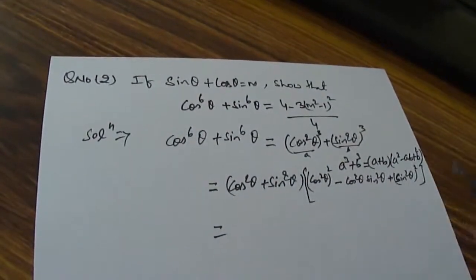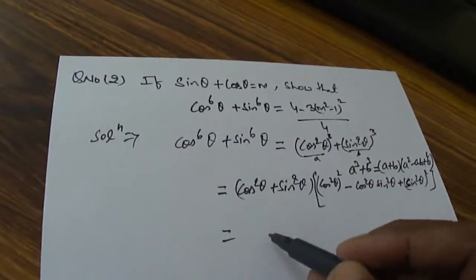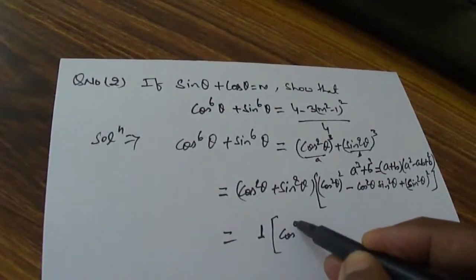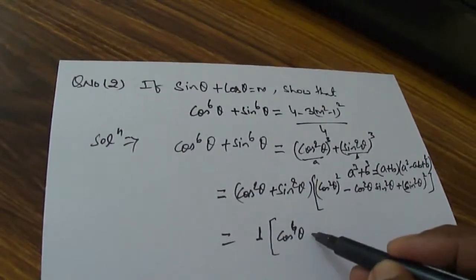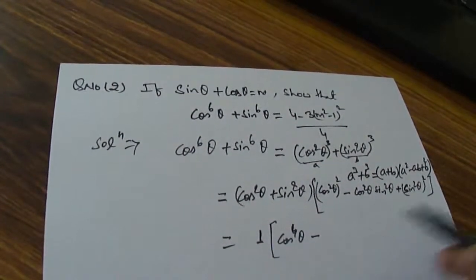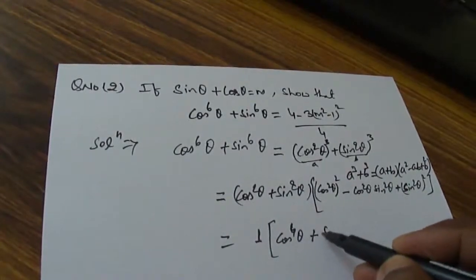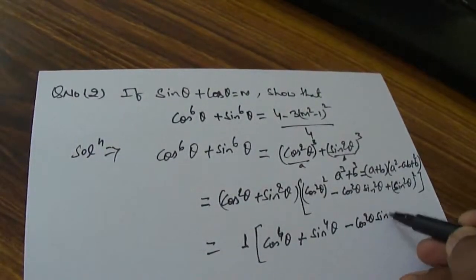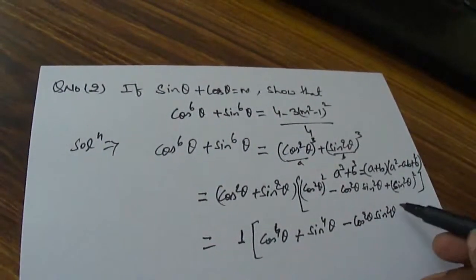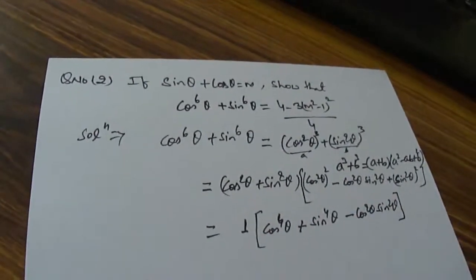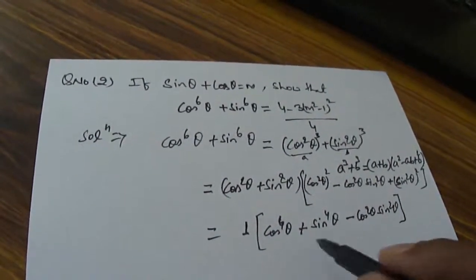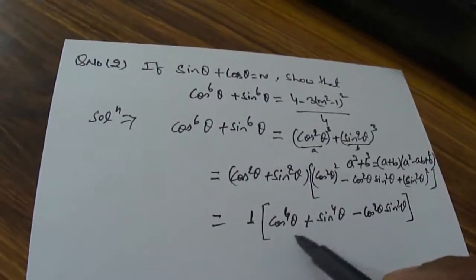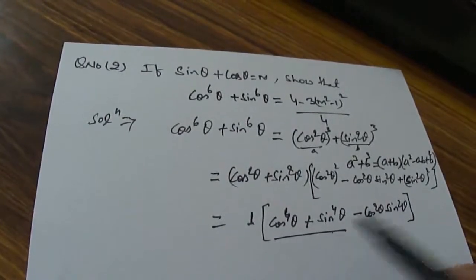Now, cos squared θ plus sin squared θ we have already seen equals 1. So we get 1 multiplied by the inside expression, which gives us cos⁴θ minus cos squared θ sin squared θ plus sin⁴θ. This needs to be resolved further.